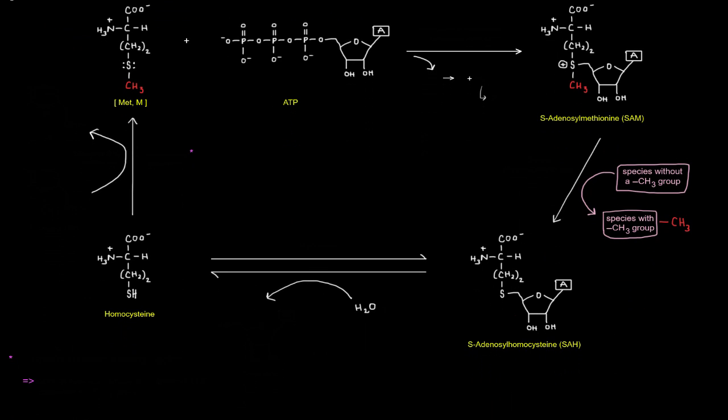So we'll start at the top left here with methionine. We've labeled that one carbon group in red so that we can keep track of it. So we'll start off with methionine and ATP to basically make SAM. So let's do some arrow pushing here. Let's do the arrow pushing in a turquoise color here. So this sulfur will nucleophilically attack this carbon right here on adenosine,